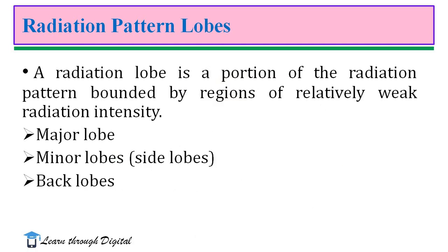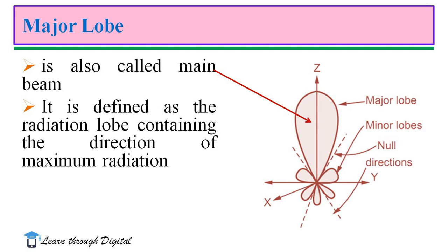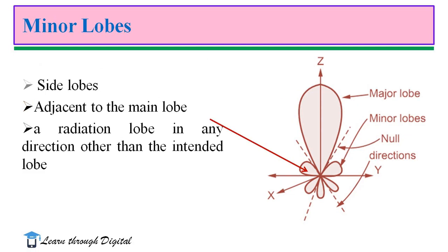A radiation pattern lobe is a portion of the radiation pattern bounded by regions of relatively weak radiation intensity. There are three lobes: major lobe, minor lobe, and back lobe. The major lobe is otherwise called as main beam. It is defined as a radiation lobe containing the direction of maximum radiation. This figure illustrates the major lobe, minor lobe, and their directions. The major lobe consists of maximum radiation in a desired direction.